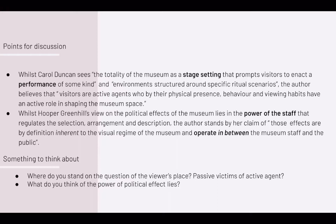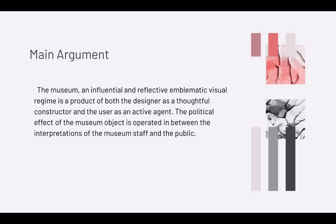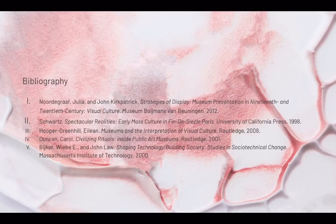This slide contains my main argument, summarized and concluded after reflecting on the three arguments from the text: the museum — an influential and reflective emblematic visual regime — is a product of both the designer as a thoughtful constructor and the user as an active agent. The political effect of the museum object is operated in between the interpretations of the museum staff and the public.